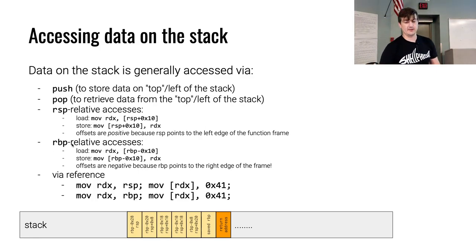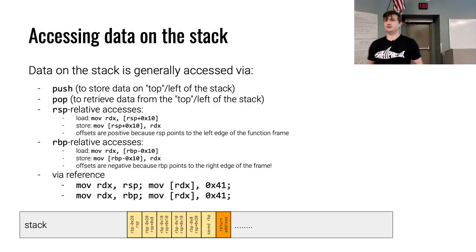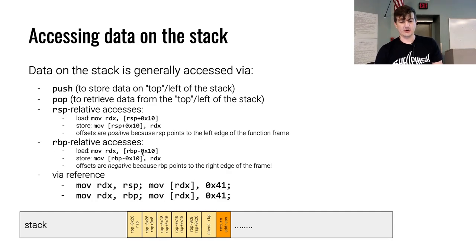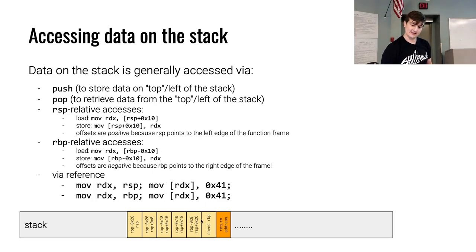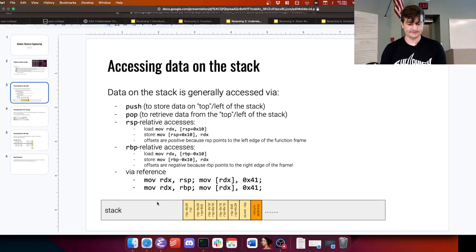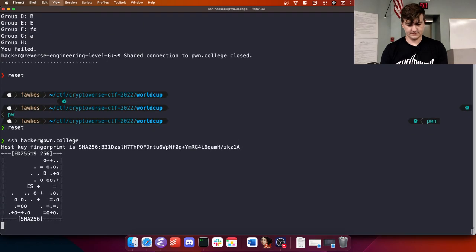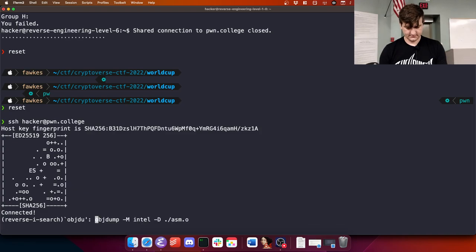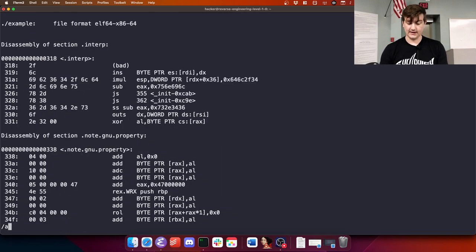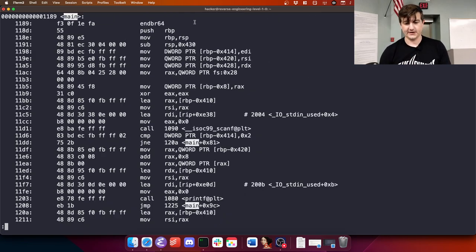We can also access data on the stack relative from the base pointer RBP. We looked at how every time we call a function, the first thing it does is set up the function frame by creating a new base pointer and then subtracting space for local variables. Base pointer accesses will typically be negative because RBP points somewhere above. So whenever you see RBP minus something, that usually means a local variable.